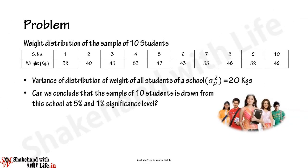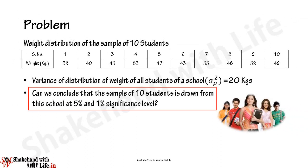Let's take a problem to understand the use of the chi-square test. The weights of 10 students are given in the table. The variance of the distribution of weights of all students of a school is 20 kg². Can we conclude that the sample of 10 students is drawn from the school at 5% and 1% significance levels? To solve this, we first need to calculate the variance of the sample.